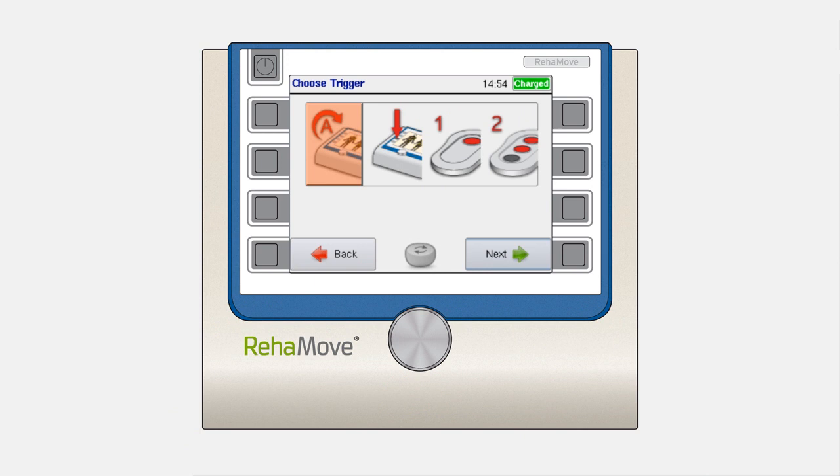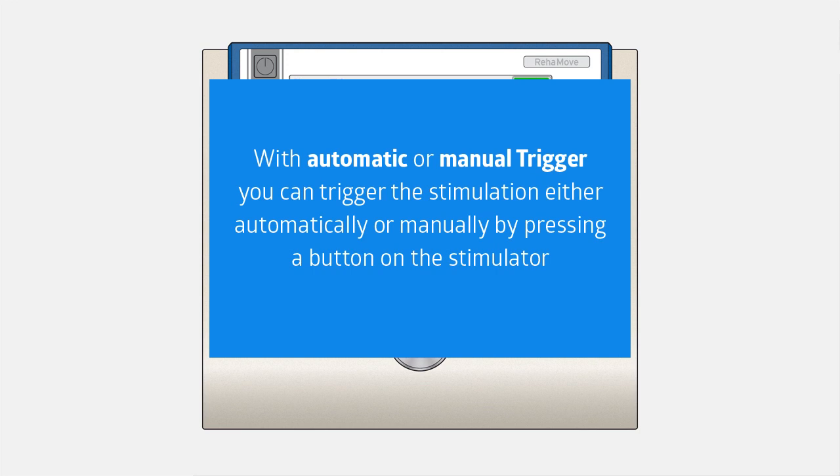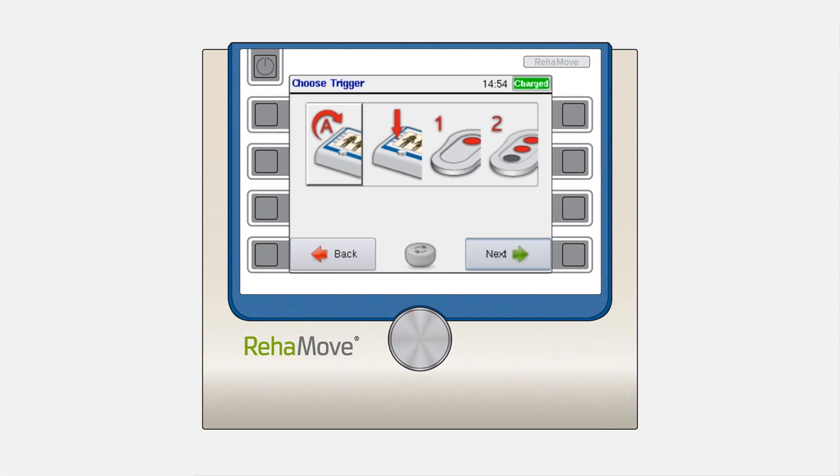Sequence training offers an automatic or manual trigger with every sequence training program. That means the stimulation can be triggered automatically or manually by pressing a button on the ReaStim2. You also have the option to upgrade to a single or double external trigger.